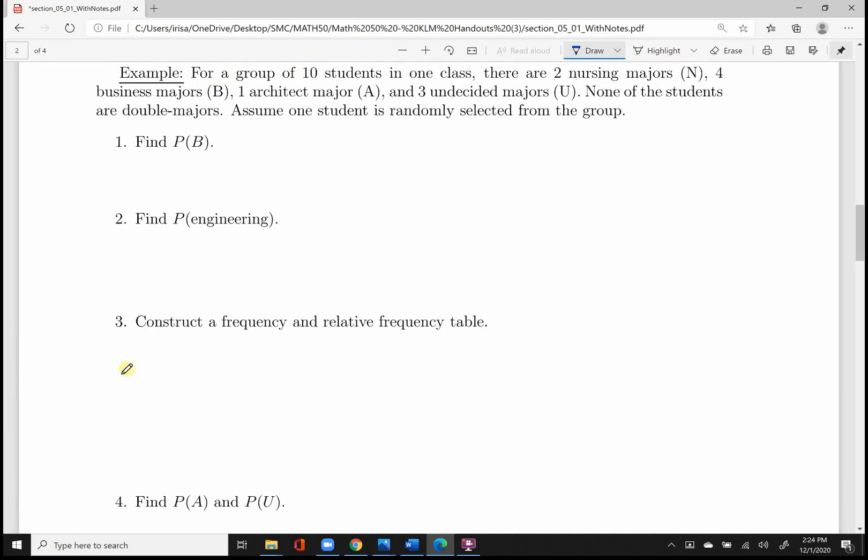So let's entertain this example right here in which we have a group of 10 students in one class. There are two nursing majors, we'll call them N, four business majors denoted by B, one architect major denoted by A, and three undecided majors denoted by the letter U. None of the students are double majors. Assume one student is randomly selected from the group. So we want to, in doing so, find the probability of that one student being a business major. So that means we have to find P of B's value. Now remember, that's the number of outcomes that are associated with event B, so that'll be four students. And how many students were there total? There were 10 students total. So simply come up with the ratio of number of business students over number of students total in the group and reduce the fraction. So it's conventional to present the reduced fraction and also the decimal equivalent, which in this case will be 0.4.